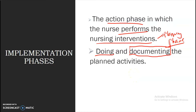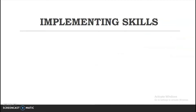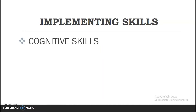Before we go to the process of the implementation phase, let us discuss the skills we need to possess as a professional or practicing nurse. In implementing interventions, we need cognitive skills. Cognitive skills refer to the knowledge of the nurse about the condition of the patient, the prognosis of the patient's disease or illness, the skills we need to perform, and any information related to the patient's condition.